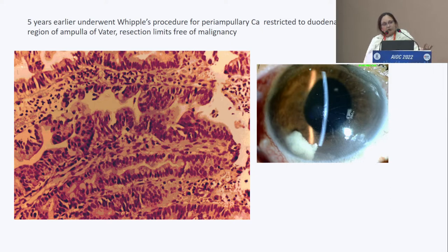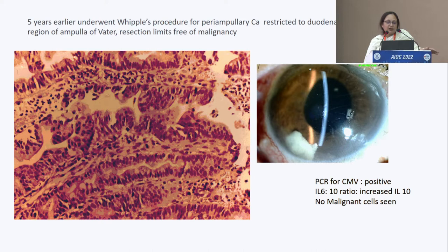We waited and investigated further. PCR for CMV was also positive, and when we did the IL-6/IL-10 ratio, it showed increased IL-10, which was indicative of malignancy rather than inflammation.